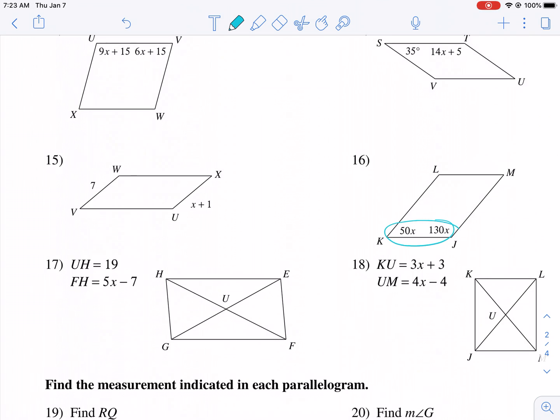Again, these are going to be supplementary. This one's very, very easy. We just say 7 is equal to x plus 1, because they're opposite sides. So x equals 6.